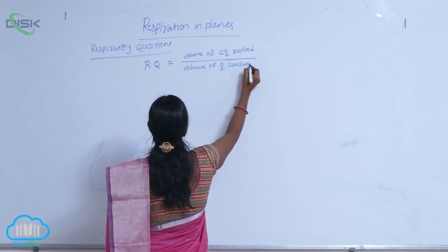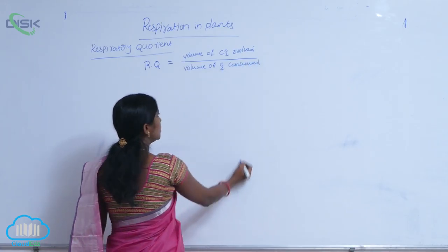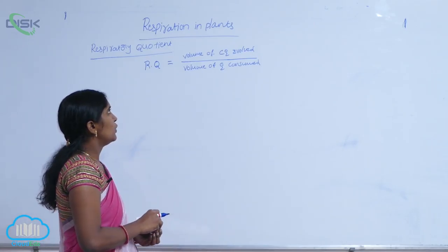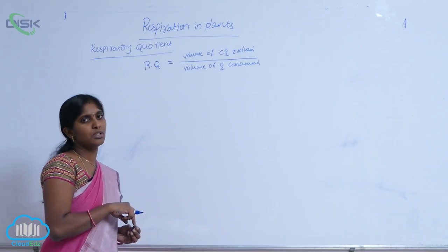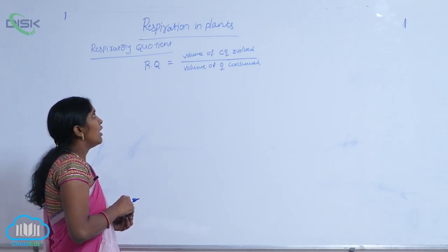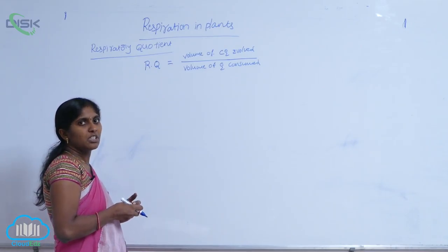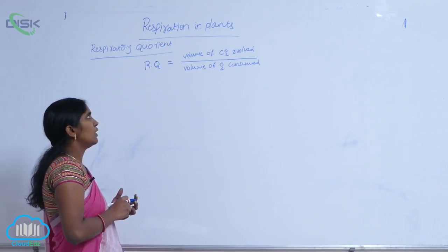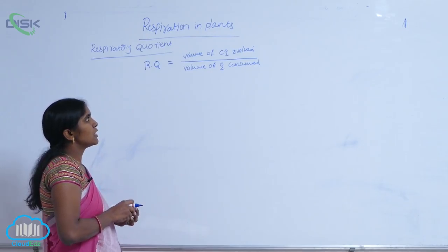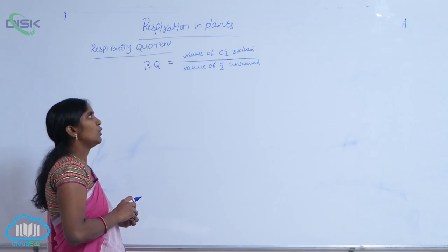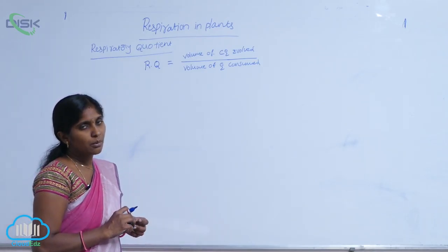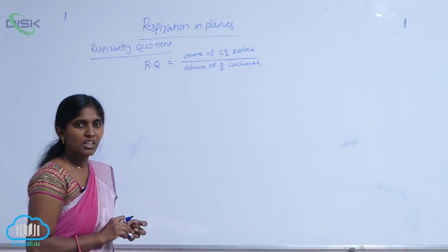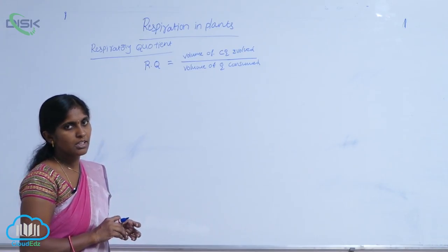It means the ratio is between volume of CO2 evolved and volume of O2 consumed. Respiratory quotient is equivalent to volume of CO2 evolved by volume of O2 consumed. For carbohydrates, proteins and fatty acids, different RQ values are there.